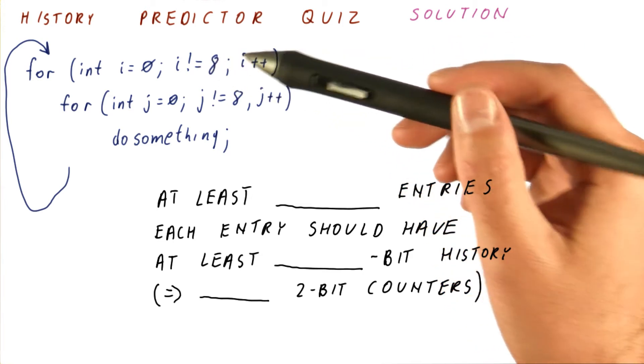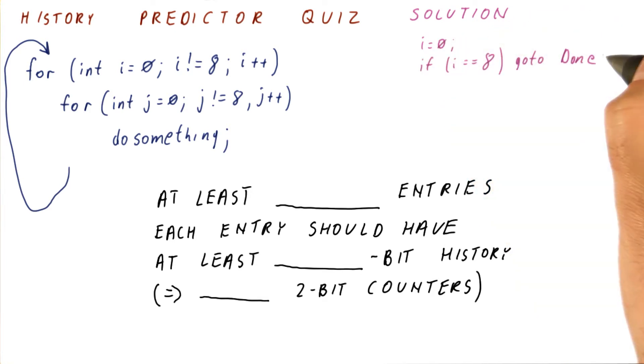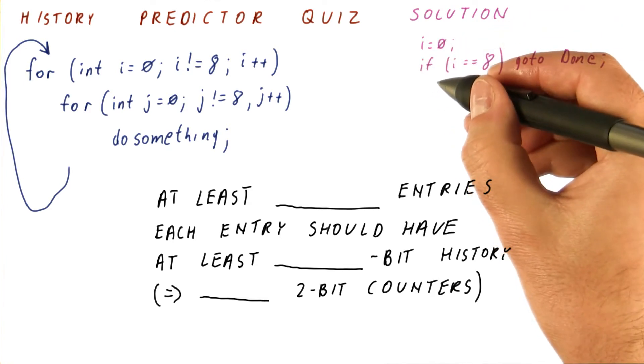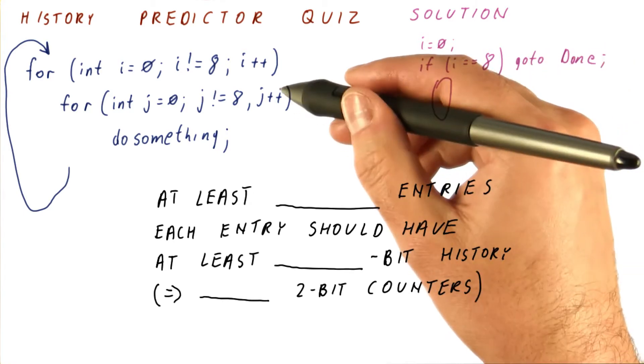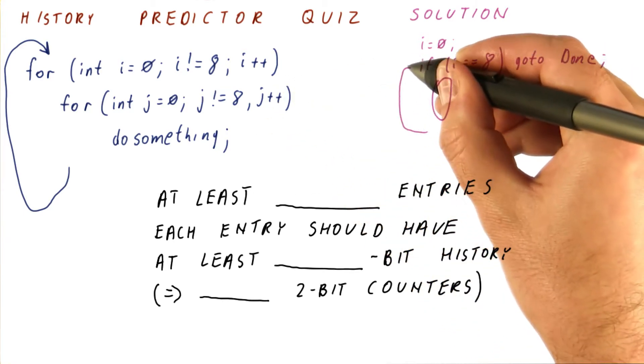So the first loop will do something like initialize i to 0. If i is equal to 8, jump to done. Otherwise, do everything that is needed for an iteration of the outer loop, and then branch back here.